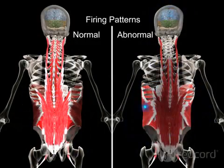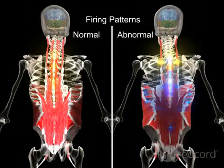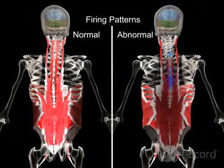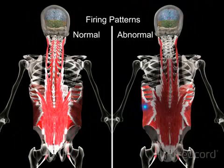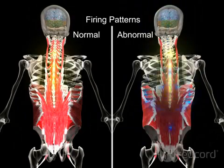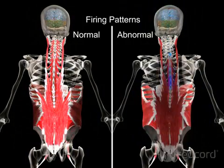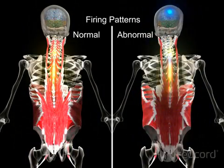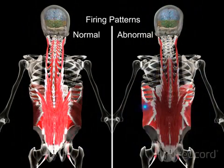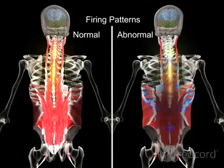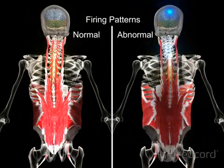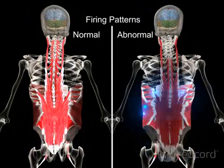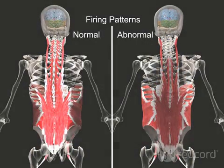The left animation shows a normal firing pattern with proper activation of the deeper stabilizing muscles, while the right animation shows an irregular firing pattern with increased but unnecessary activity in the larger muscles.